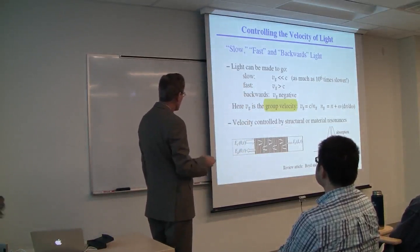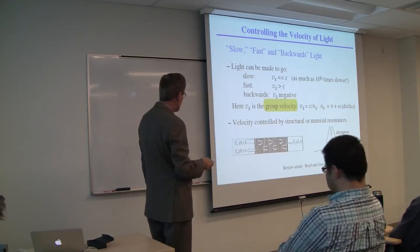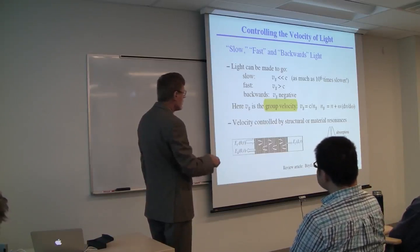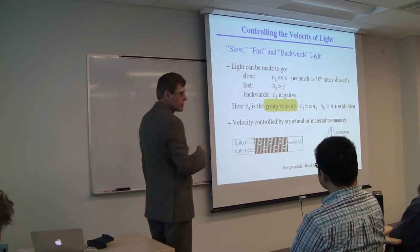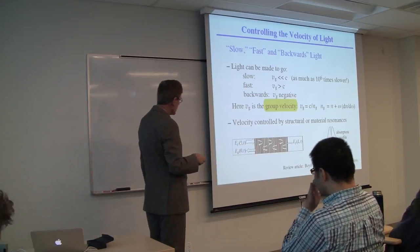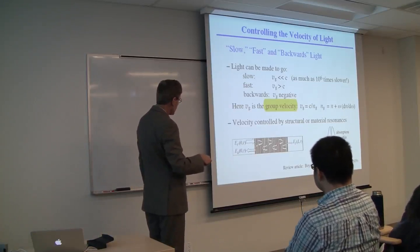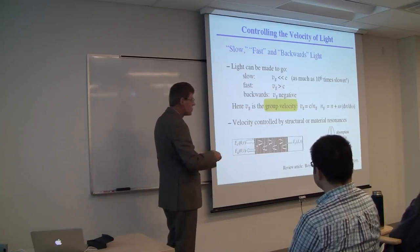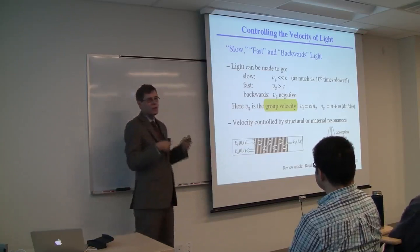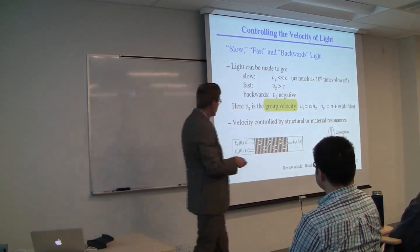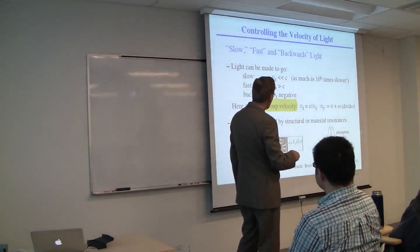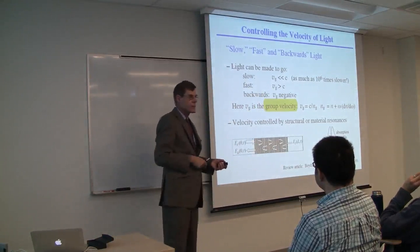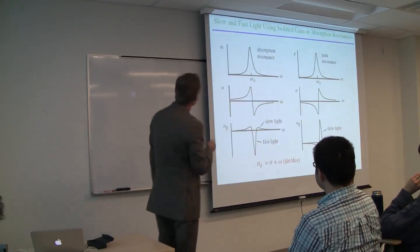There are two ways to control the velocity of light: structural resonances or material resonances. Imagine a waveguide with a Bragg grating impressed upon it. The light gets scattered in the backwards direction, then forward, then backward. It takes longer to get through the material. If you have a very narrow feature in an absorption profile, you can also get slow light by that mechanism.